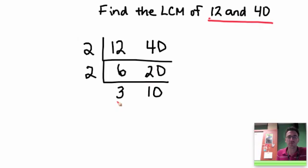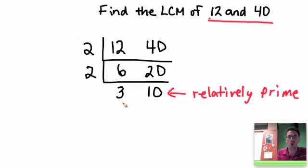And just like we did for GCF, we stop when the two numbers at the bottom are relatively prime, which if you remember means that they have no common factors. There's nothing that divides evenly into both 3 and 10.